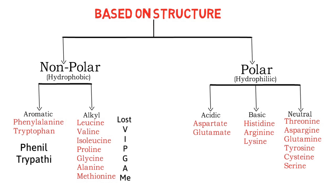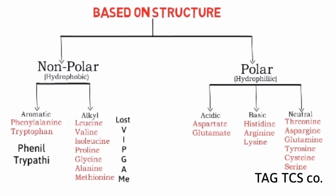It is easy to remember polar acidic and basic amino acids. Mnemonic for neutral amino acids is 'TAG TCS company': TAG - threonine, asparagine, glutamine; and TCS - tyrosine, cysteine, and serine.